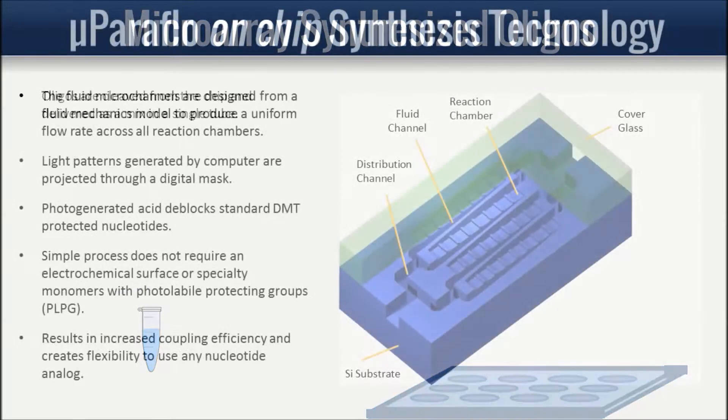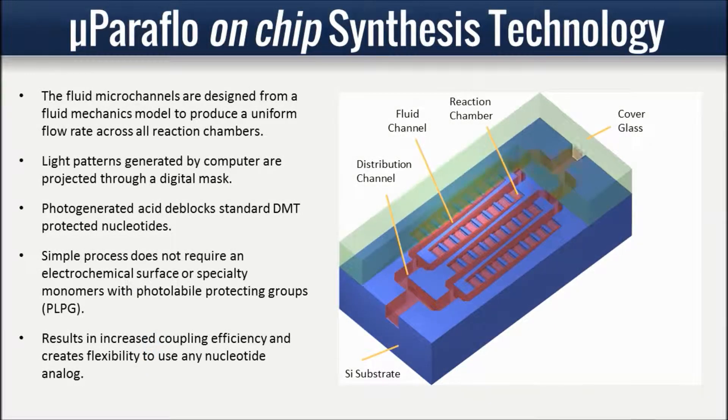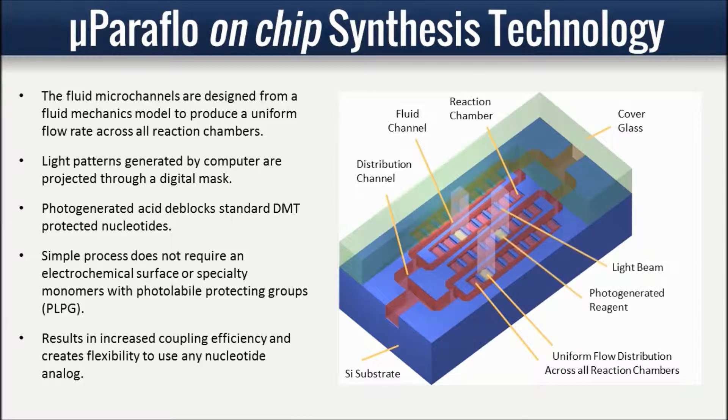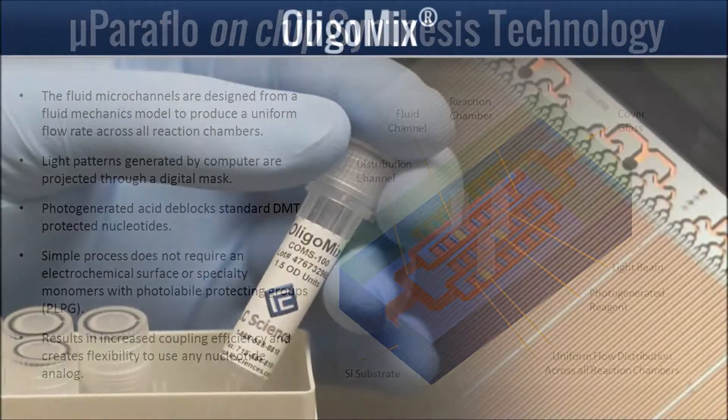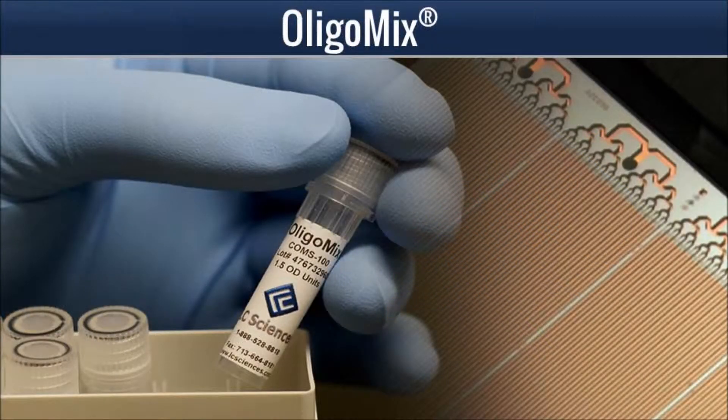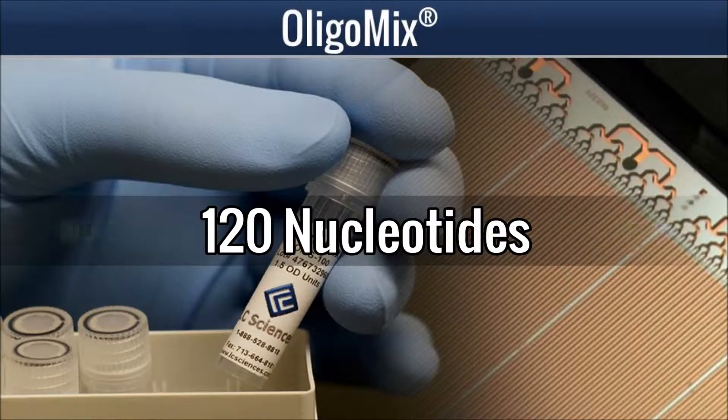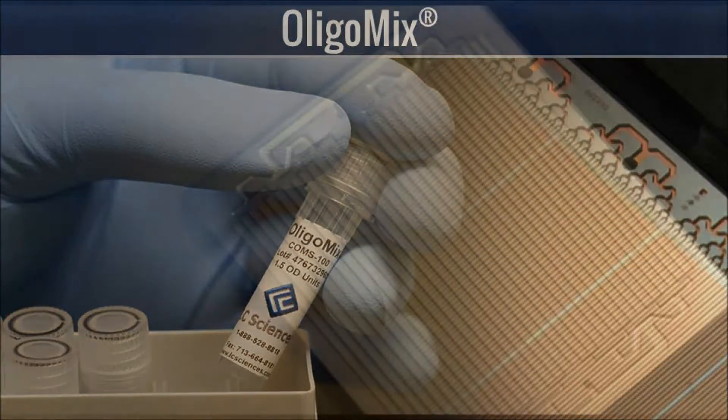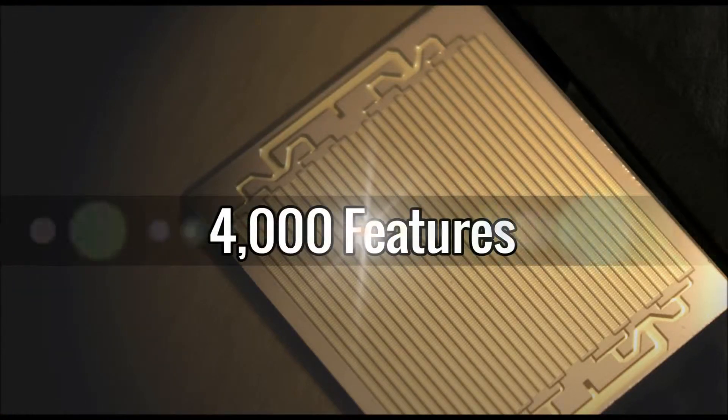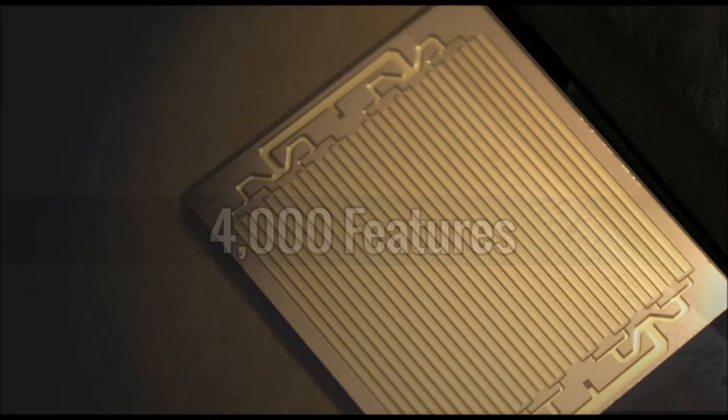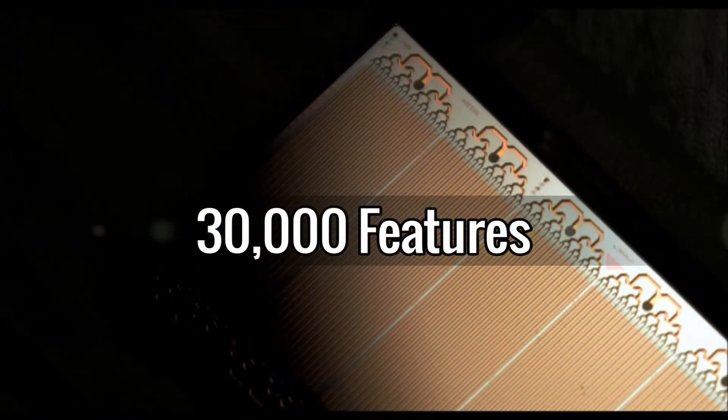Synthesis occurs via standard DMT chemistry, assuring efficient stepwise yield and high-quality final product. The product is delivered as a pool in a single microtube, ready for use in your experiment. The maximum length of OligoMix synthesis is 120 nucleotides. We have two microarray chip sizes: a 4,000 feature chip and a 30,000 feature chip.